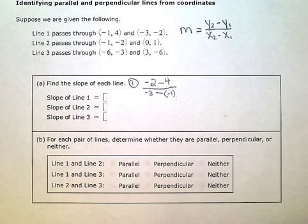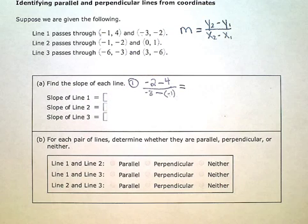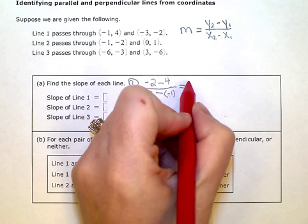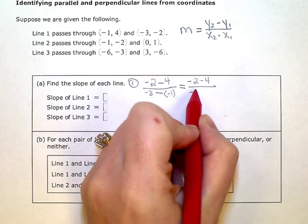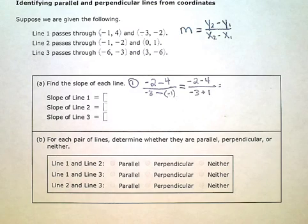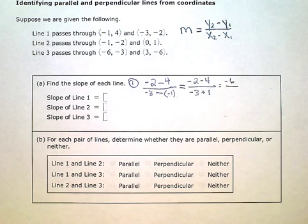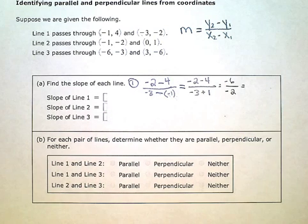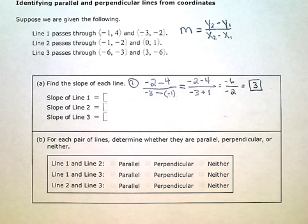When we subtract a negative, that's the same as adding that number. So on top, I have negative 2 minus 4. In the denominator, I could rewrite this as negative 3 plus 1. Now I'm just going to simplify. Negative 2 minus 4 is negative 6. Negative 3 plus 1 is negative 2. And negative 6 divided by negative 2 is positive 3. So the slope of my first line is positive 3.